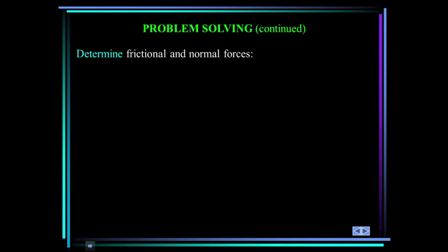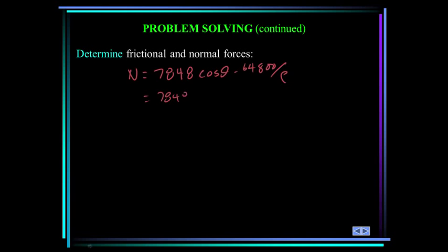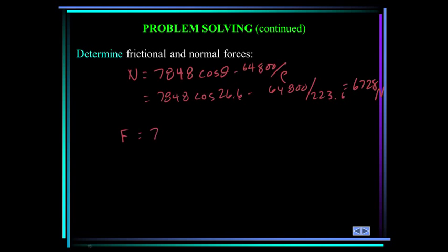Now that we know rho = 223.6 m and theta = 26.6°, we can solve for the forces. The normal force N = 7848 cos(26.6°) - 64800/223.6 = 6728 newtons. The frictional force F = 7848 sin(26.6°) - 2400 = 1114 newtons.